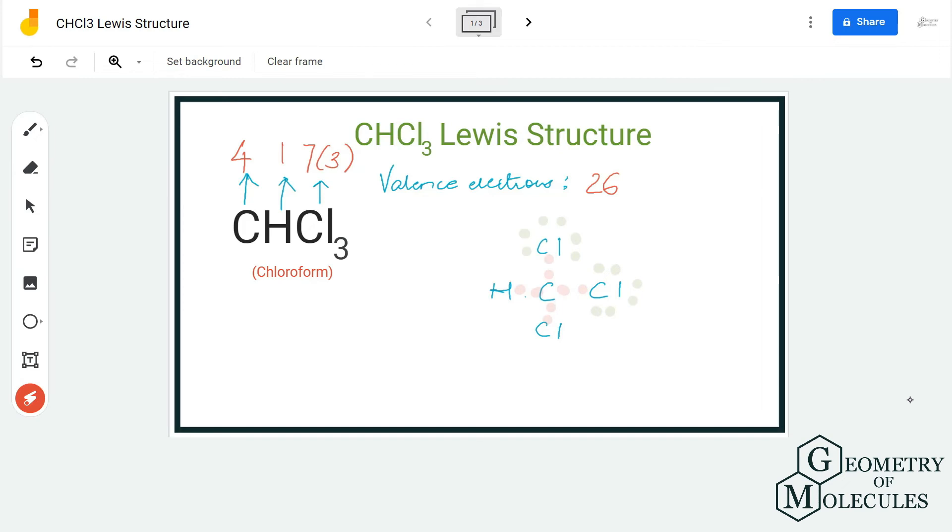We place 6 valence electrons around each chlorine atom to complete their octets. We have now used all 26 valence electrons, and all atoms in this molecule have complete octets. Carbon has 8 valence electrons, each chlorine has 8 valence electrons, and hydrogen has 2 valence electrons. This is the Lewis structure for